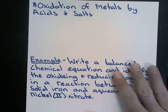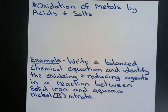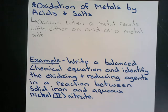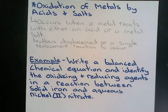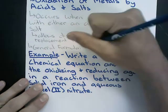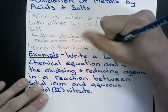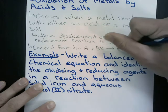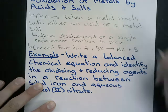Now we can talk about one more concept before going through oxidation-reduction examples. If oxidation occurs by a metal from acids or salts, this occurs when a metal reacts with either an acid or a metal salt. This allows a single replacement reaction to occur. The generalized formula is: substance A combines with compound BX, A bumps out B, so it becomes AX + B as our products.